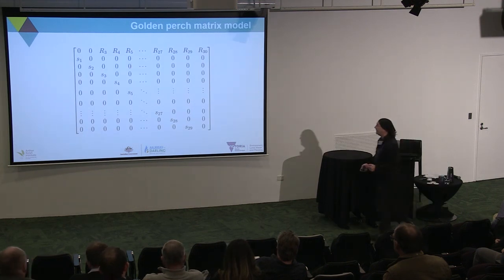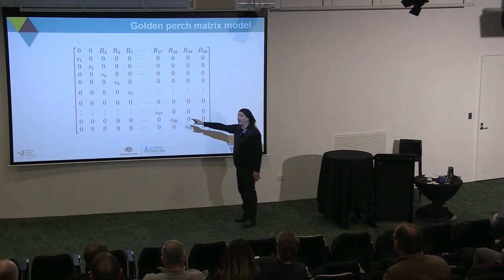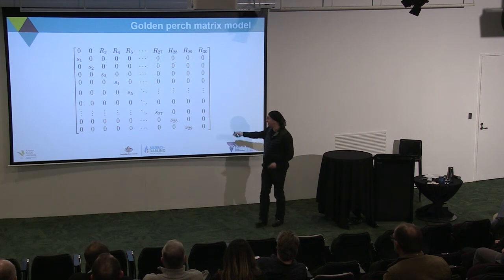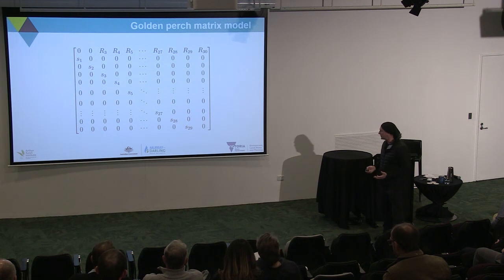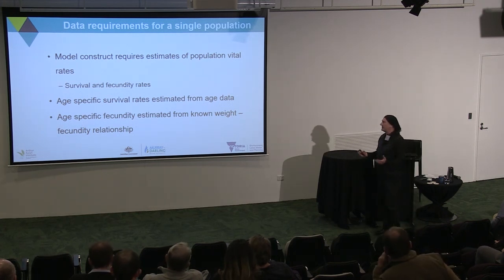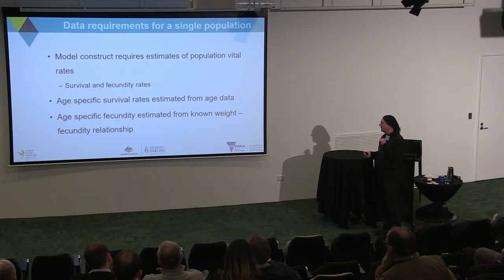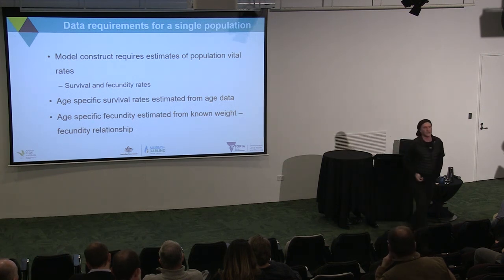The model has recruitment in the top row and survival in the diagonal. In this case, we have a 30-age class model for Golden Perch. The model construct requires us to estimate population parameters — in particular, survival and fecundity rates — and then we derive age-specific survival rates from age data and fecundity from known weight-fecundity relationships.